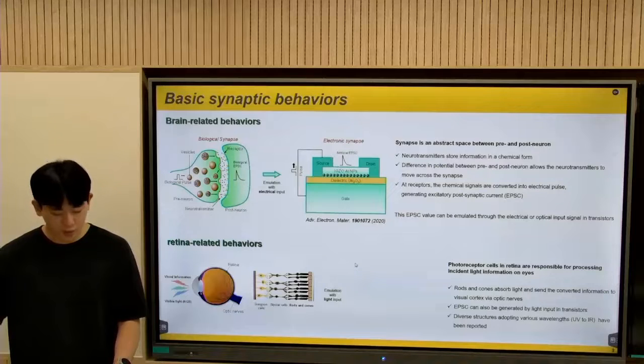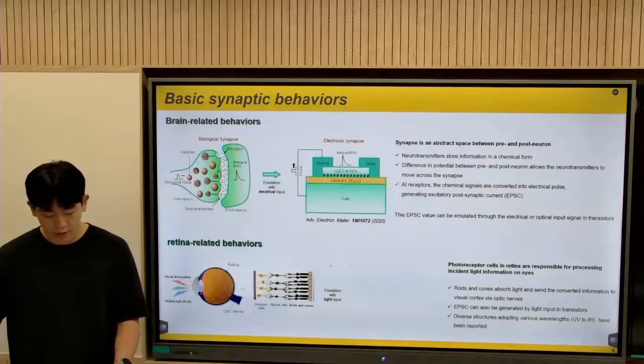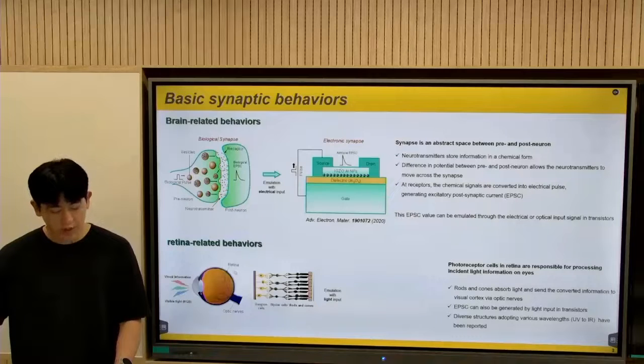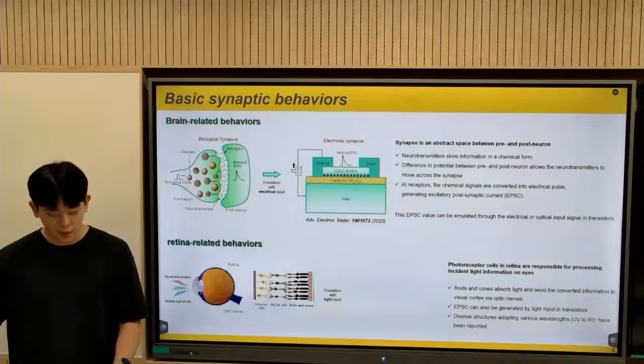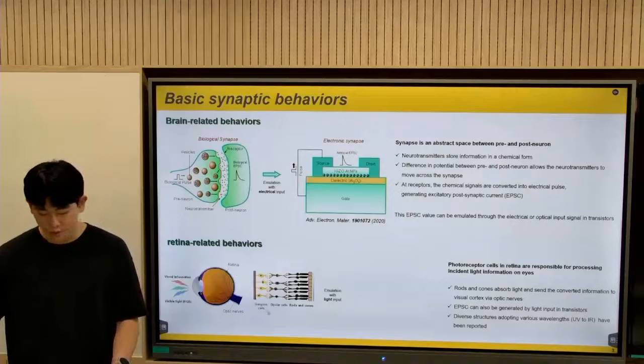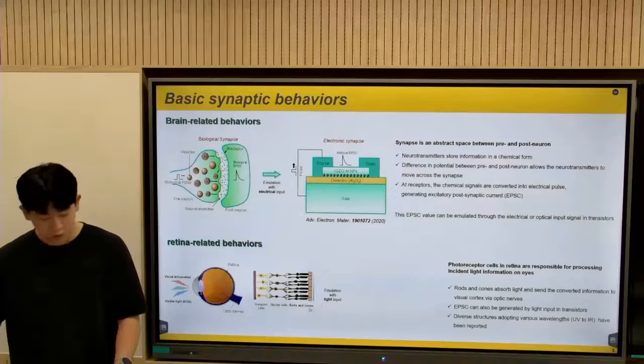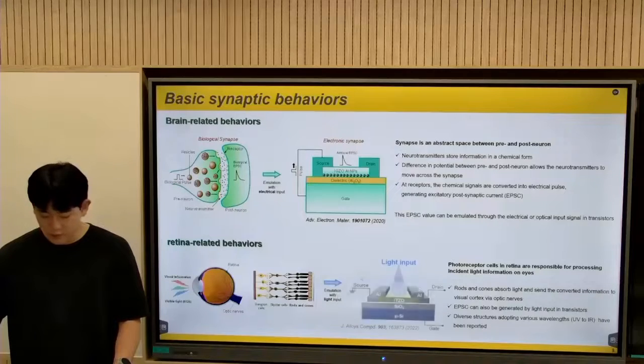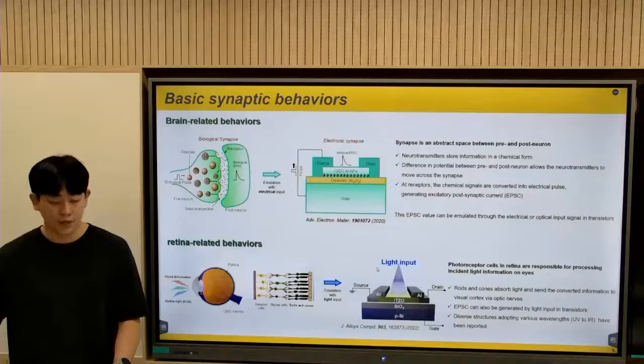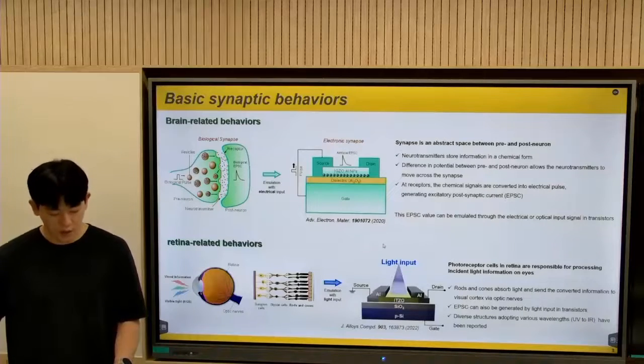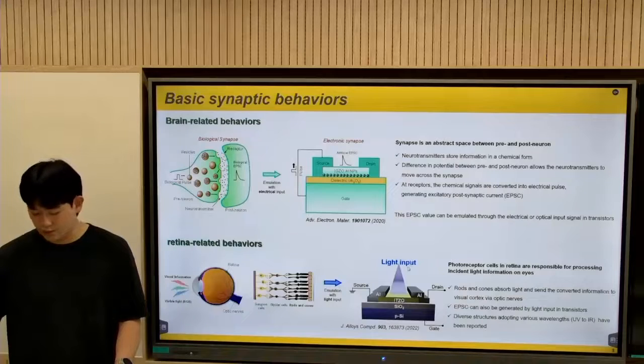Next up, a human eye is simply illustrated here. Retina is a light processing tissue lying back of the eye, turning the incident visible light into electrical signals performed by photoreceptors called cotton rod. Similarly, I have reported the emulation of retina-inspired behaviors using UV light with the oxide transistors.